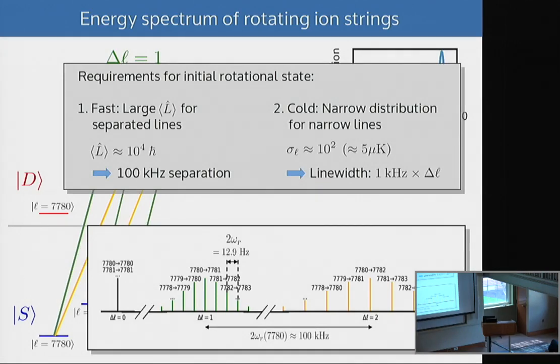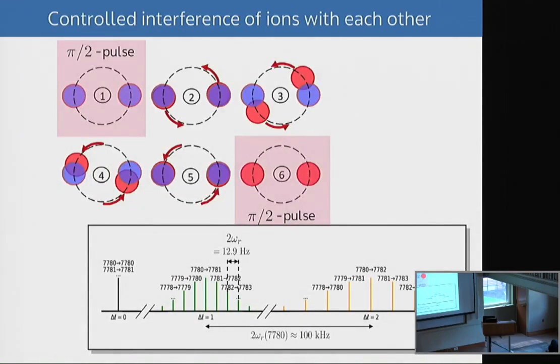In order to achieve that, we need to spin the ions up to on the order of 10,000 hbar. That corresponds to 100 kilohertz separation, which is nice. You still need to cool the angular momentum distribution to something reasonable, let's say a hundred quanta, corresponds to five micro-Kelvin, that's not so bad. That actually leads to a line width on the order of a kilohertz times actually how many quanta you want to impart on the system.